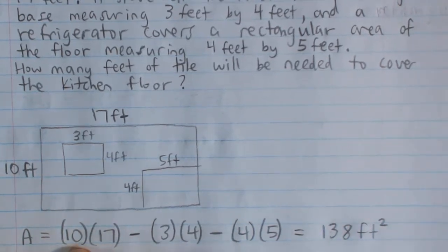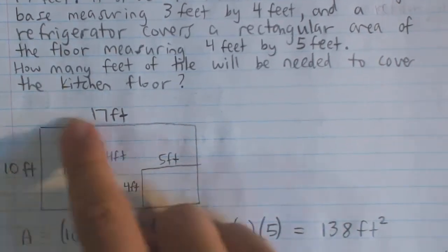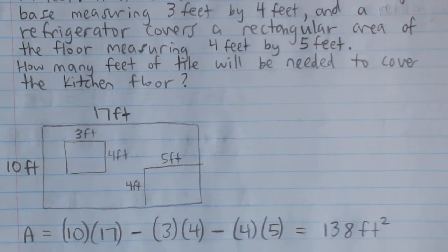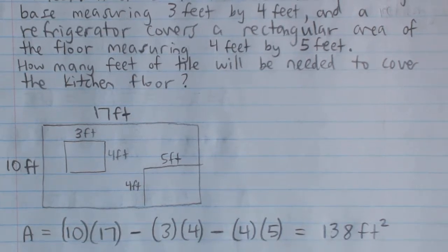The area of our entire kitchen is 10 times 17, and we subtract the area of the stove, 3 times 4, and subtract the area of the refrigerator, 4 times 5. If you do that calculation, you'll get 138 square feet, and so that is our final answer.